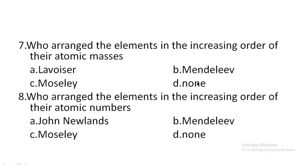Who arranged the elements in the increasing order of atomic masses? Option A: John Newlands, option B: Mendeleev, option C: Moseley, option D: none of the above. The elements arranged on the basis of atomic masses — the first scientist was Mendeleev. So option B is the correct answer.